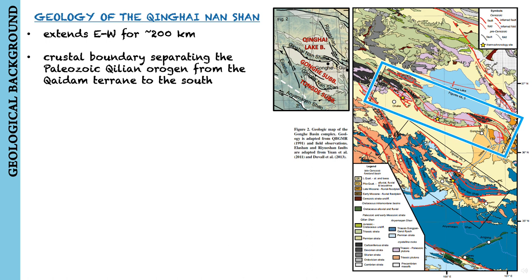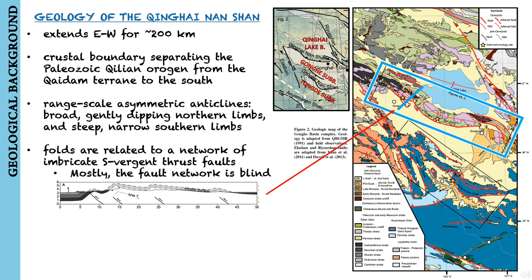The range is located along a crustal boundary separating the Paleozoic Qilian origin from the Qaidam terrain to the south. Geologic map patterns and topography indicate that the range consists of a series of range-scale asymmetric anticlines with broad, gently dipping northern limbs and steep, narrow southern limbs. The folds are related to a network of imbricate south-vergent thrust faults which are blind along most of the Qinghai-Nanshan.